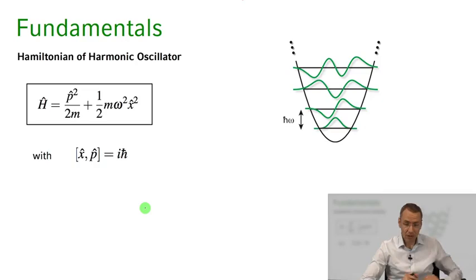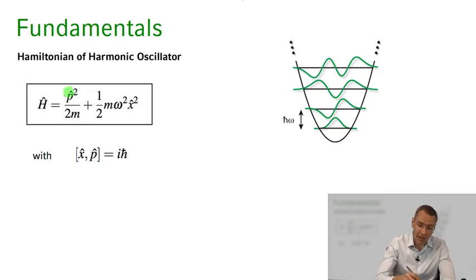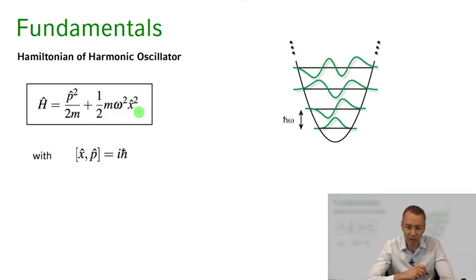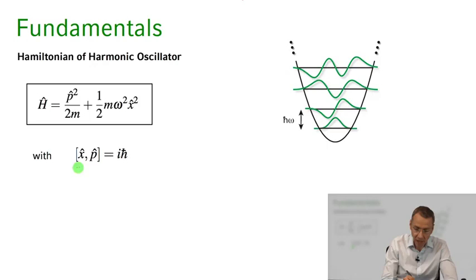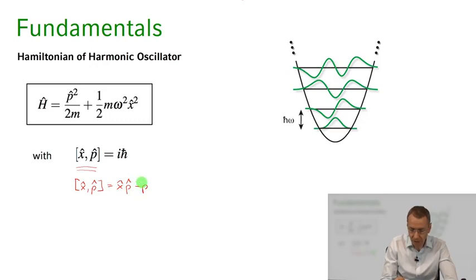The setting we're considering is a particle in a harmonic trap. The particle has kinetic energy p squared over 2m and potential energy one half m omega squared x squared. Between the position and momentum operators we have the standard commutation relation x comma p equals i h-bar, with the commutator x comma p being xp minus px.